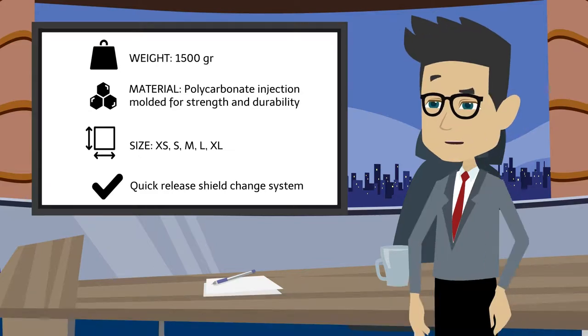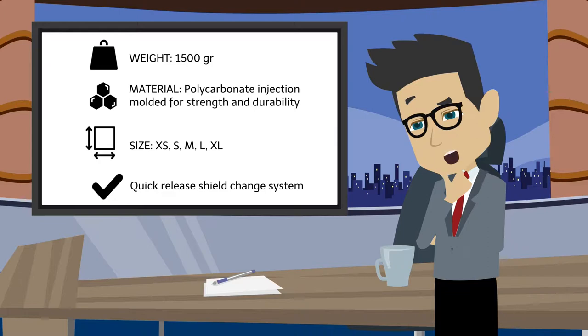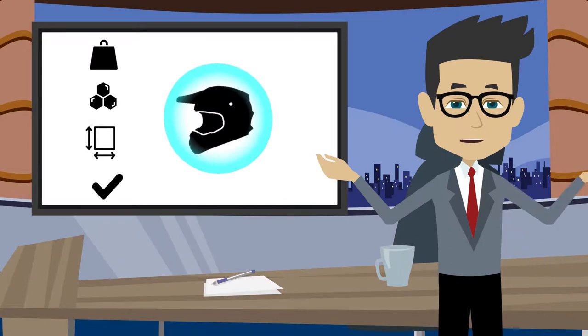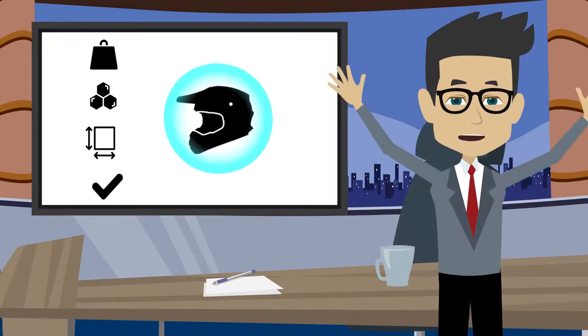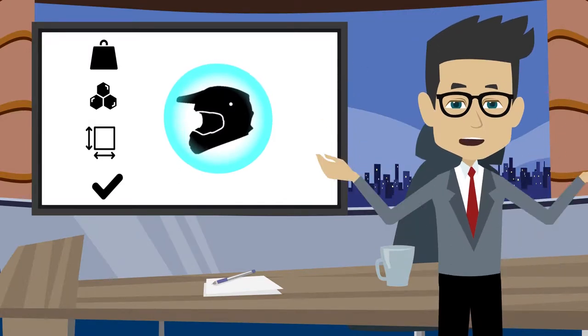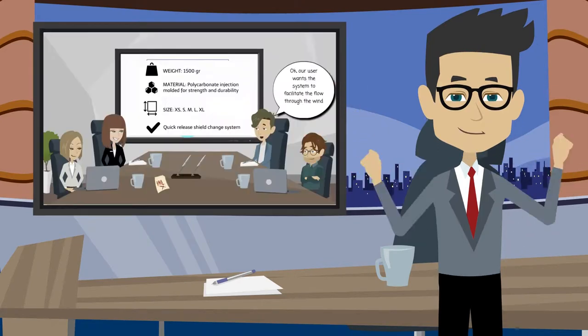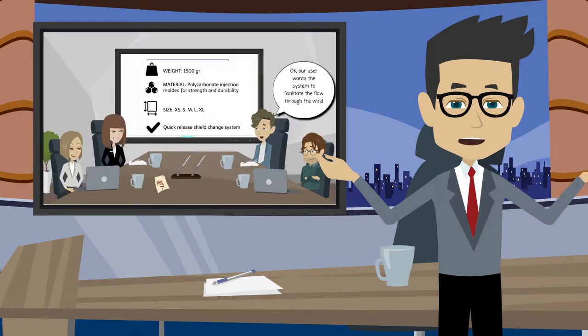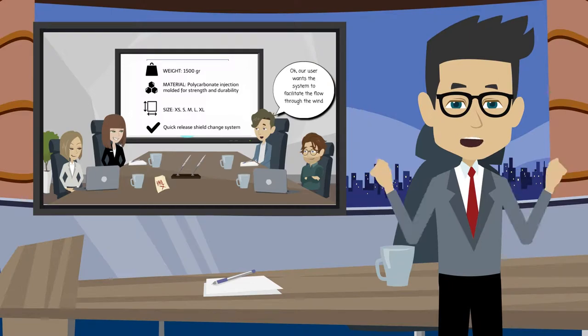It is important to know the technical specification values of the analyzed competitors for every single technical variable. For example, this helmet has some characteristics that the design team should evaluate. Some important aspects are the weight, technical data of the materials, and others that can be compared with the product that is being designed by the team.